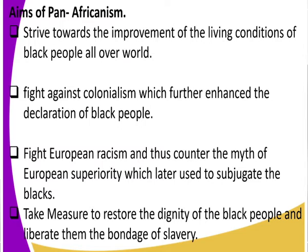Another aim of Pan-Africanism is that they fought against colonialism, which further enhanced the degradation of black people. They knew that the African continent was still under colonial powers, so they formed an organization to fight against colonialism in Africa. They also fought European racism — the black people in European countries were highly discriminated against in housing, schools, and public transport. So they were after ending the racial discrimination subjected to the black people.